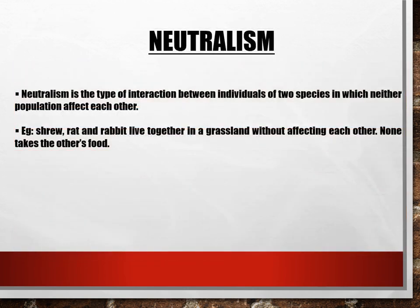Coming to the first one, neutralism. Neutralism is a type of interaction between individuals of two species in which neither population affects the other. For example, shrews, rats, and rabbits all live together in grassland without affecting each other. None takes the other's food; they are living in harmony. That type of association is neutralism.